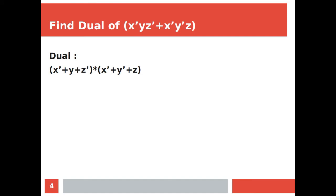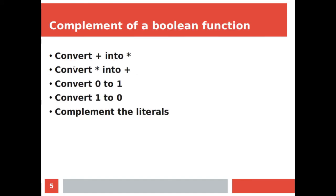Now let's move to finding the complement of a boolean function. These four steps are similar to finding the dual, with one additional step: we also complement the literals. So we convert plus to star, star to plus, zero to one, one to zero, and we also complement all the literals.